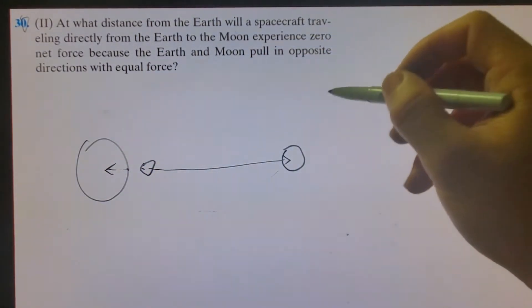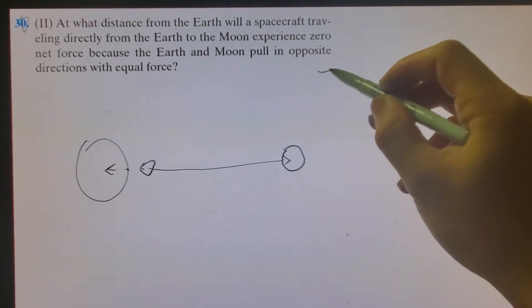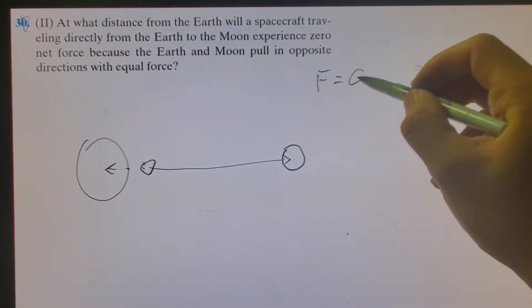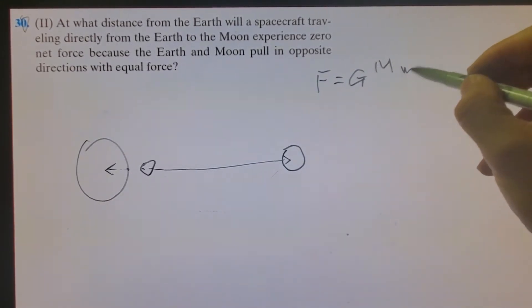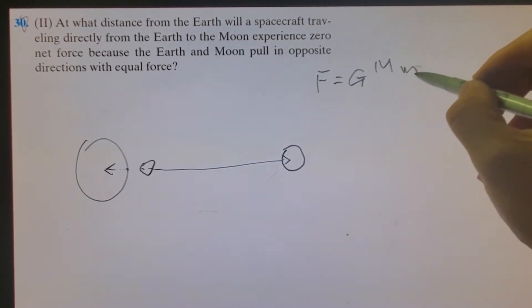Why? Well, let's look at our magical formula. Force is equal to gravitational constant times M, that's a big mass, times M small mass, that's the mass of our spacecraft, divided by R squared. R is the distance between the big object and the spacecraft.